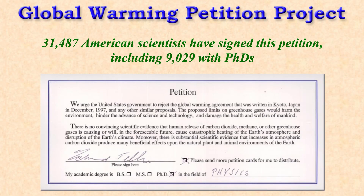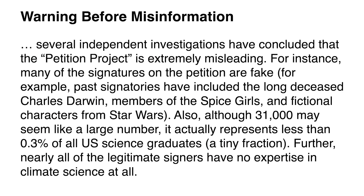In van der Linden's 2017 inoculation experiment, the misinformation shown to participants was the global warming petition project. This is a website that argues there isn't a scientific consensus on climate change because 31,000 science graduates signed a petition stating humans weren't disrupting the climate. To inoculate people against this misinformation, van der Linden explained the different ways that the global warming petition project was misleading.